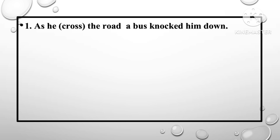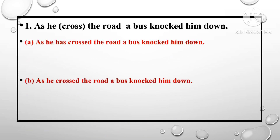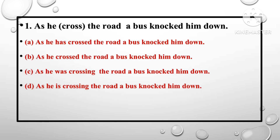Question number one: 'As he crossed the road, a bus knocked him down.' The very short question asks which verb form is correct. The options are: A) as he has crossed the road, a bus knocked him down; B) as he crossed the road, a bus knocked him down; C) as he was crossing the road, a bus knocked him down; D) as he is crossing the road, a bus knocked him down.